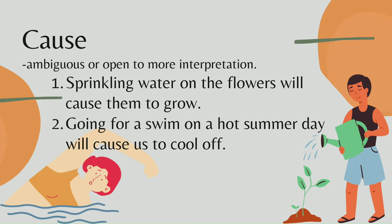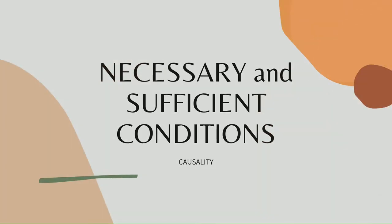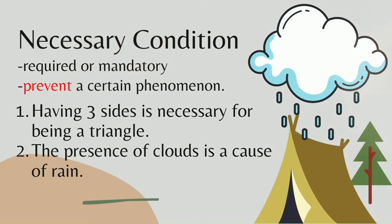To clear up this ambiguity affecting the meaning of cause, adopting the language of necessary and sufficient conditions is useful. The following conditions are the kinds of cause. First is the necessary condition, which means required or mandatory. For example, having three sides is necessary for being a triangle.